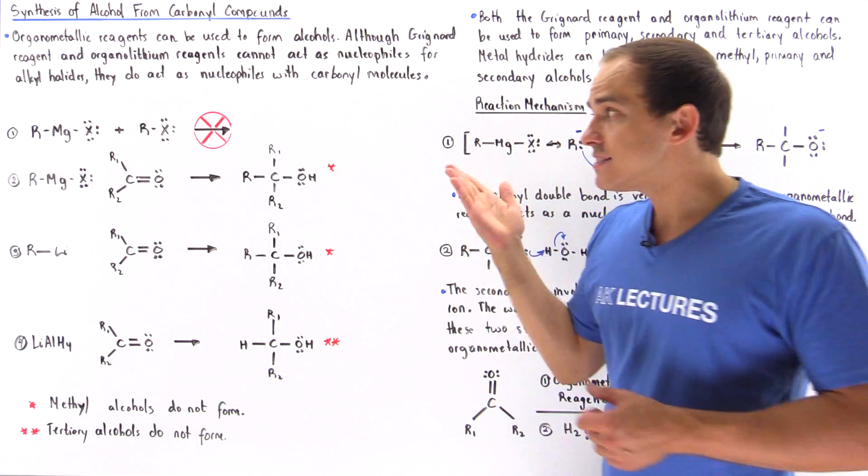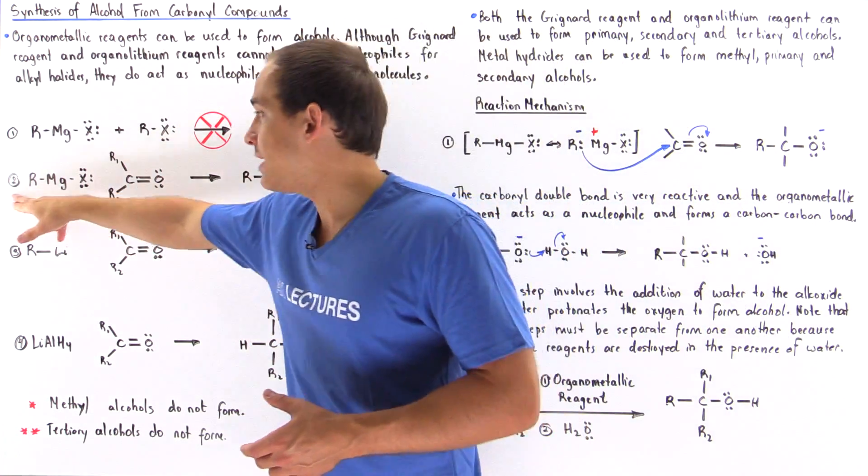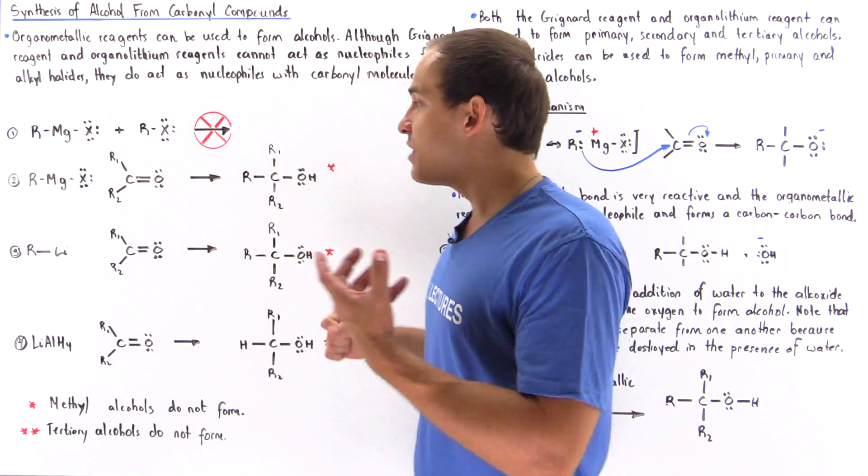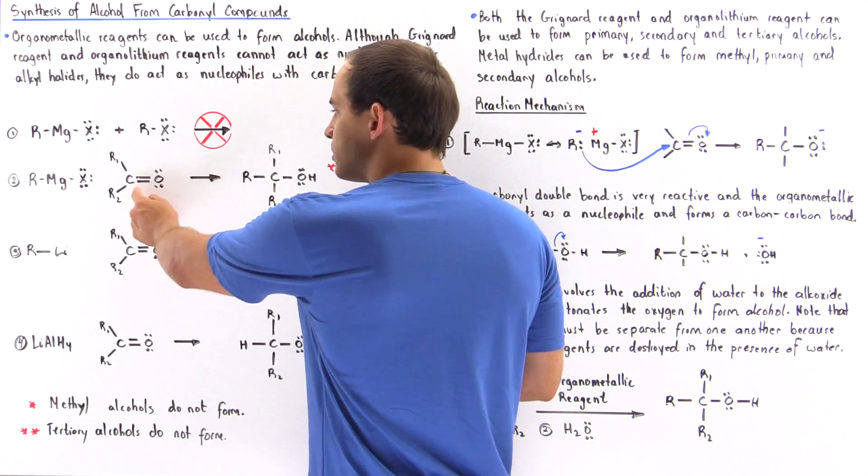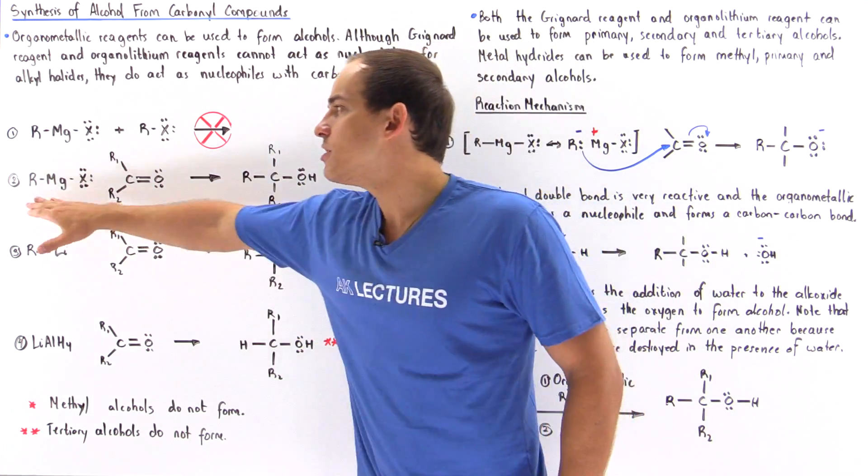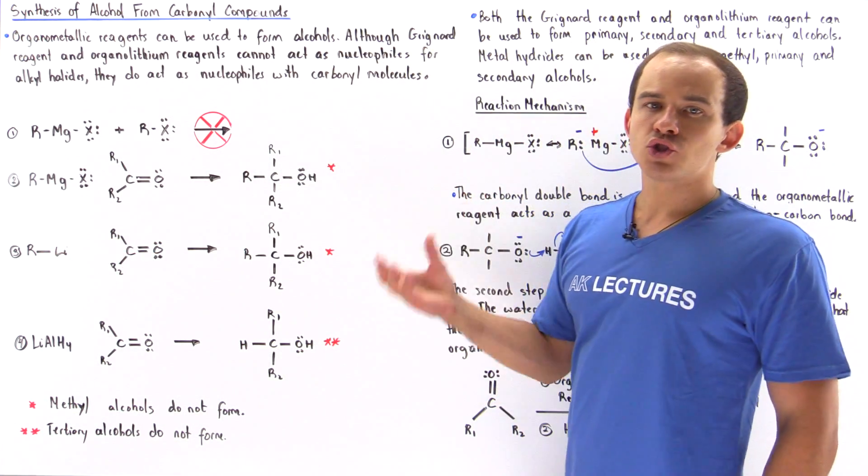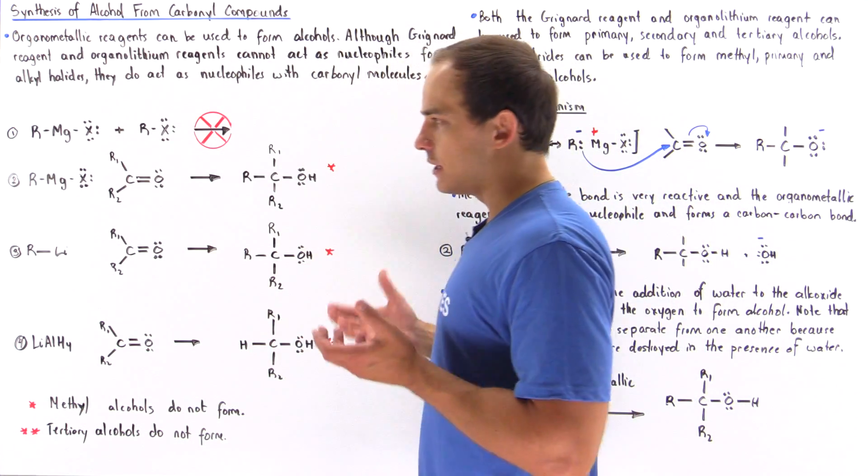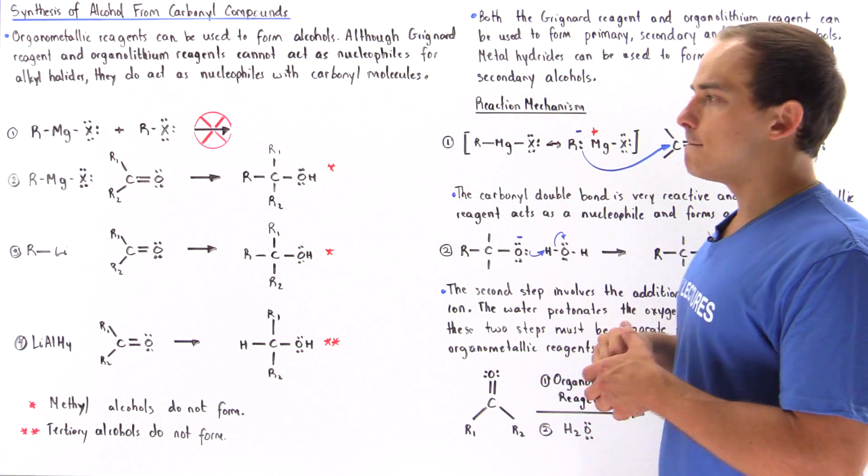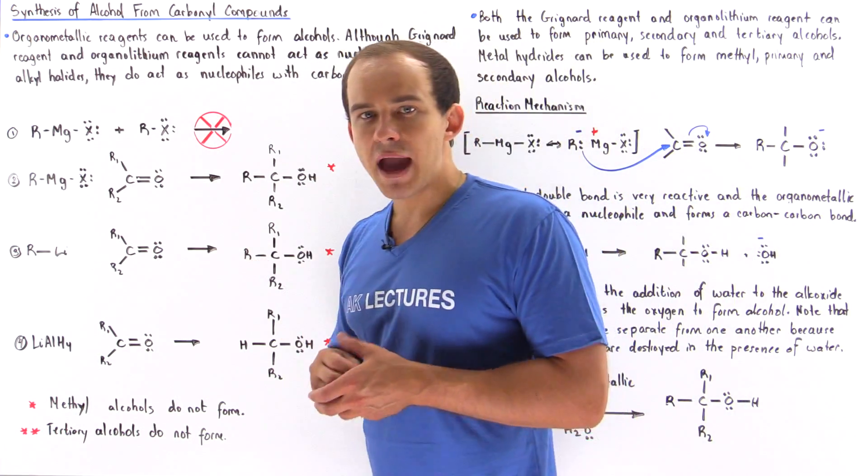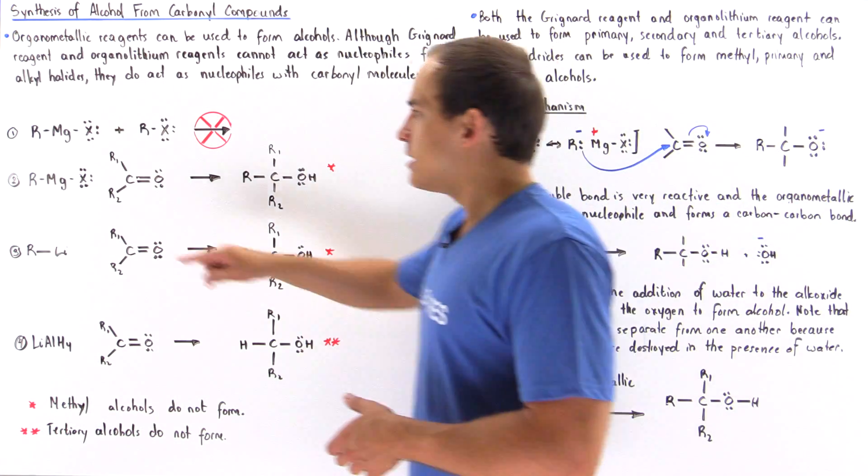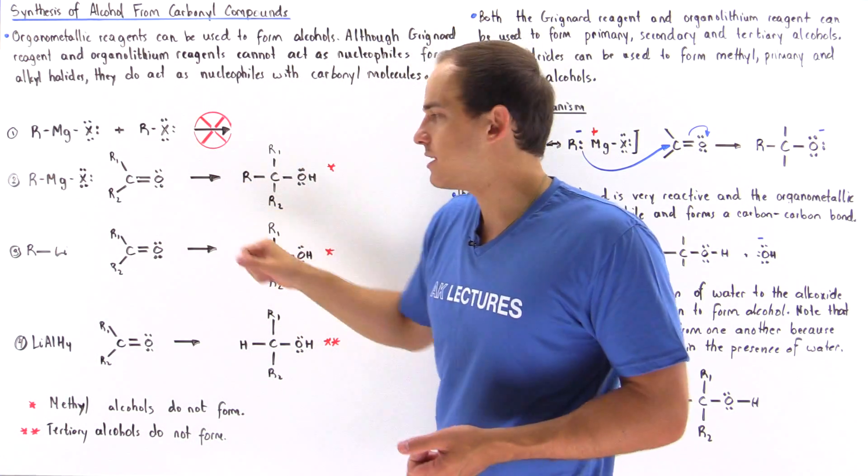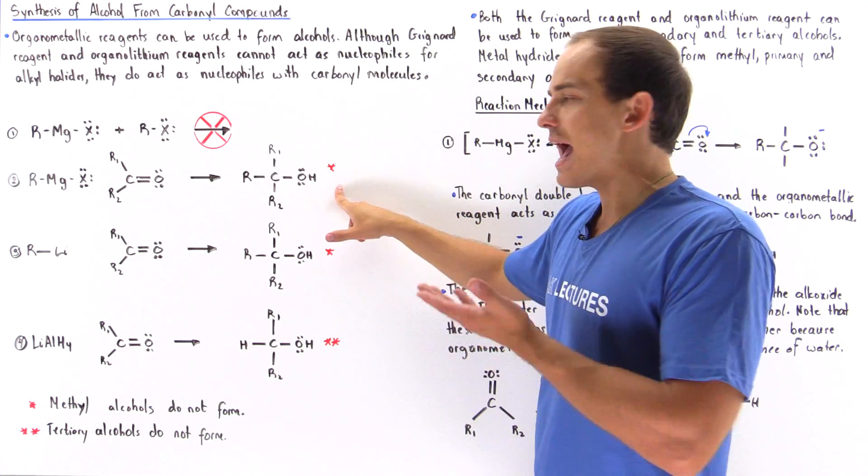However, if we place that same Grignard reagent as shown in reaction number 2 in the presence of the more reactive carbonyl molecule that contains the reactive double bond between the carbon and oxygen, this Grignard reagent is a strong enough nucleophile to undergo our nucleophilic addition reaction of the carbonyl molecule. Basically, in a two-step mechanism, this R group attacks this carbon and in the second step, the oxygen is protonated to produce this alcohol compound.